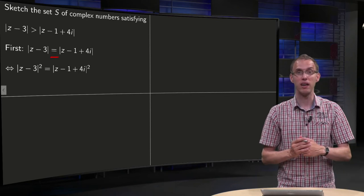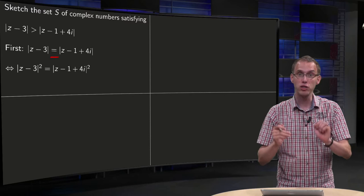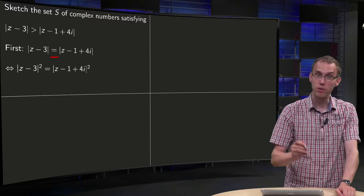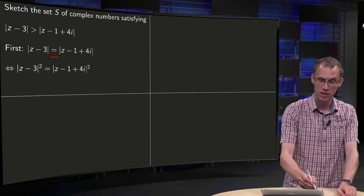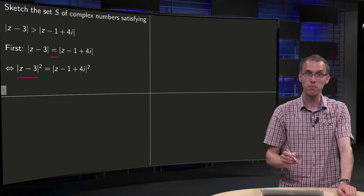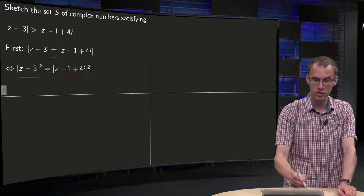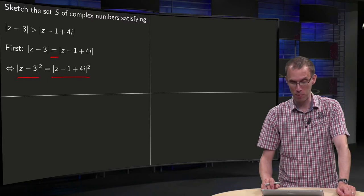To simplify, to avoid square roots later on, you can square left and right hand side, so you look for |z - 3|² equals |z - 1 + 4i|².